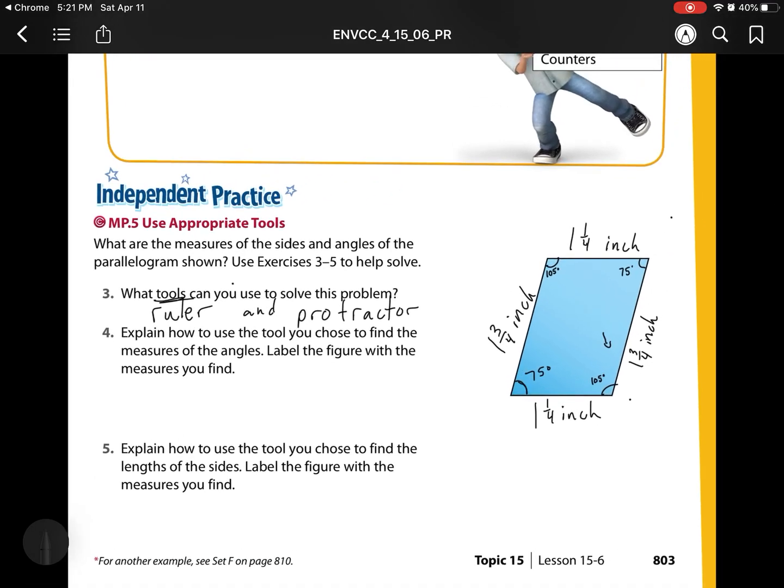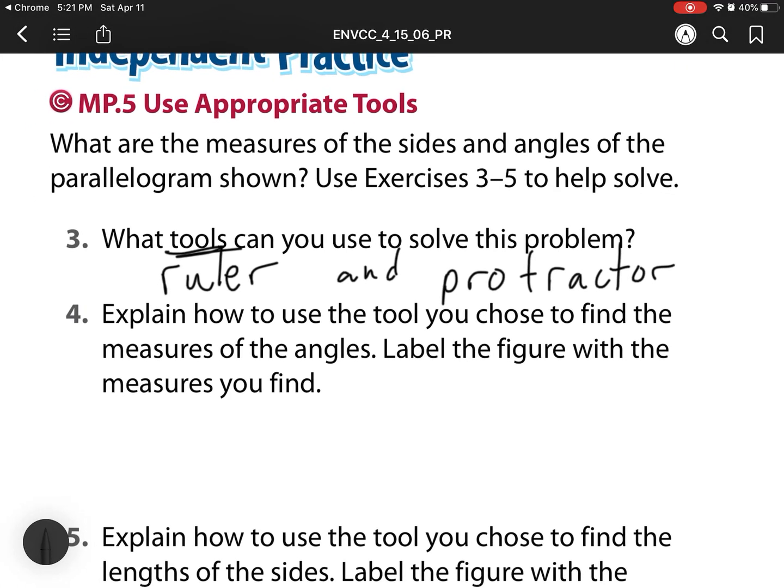So what we just did is we kind of just did number four. It says, explain how you use the tool you chose to find the measures of the angles. Label the figure with the measures you find. So we already did the labeling part, but we have to do this explaining part. So how do we do that?